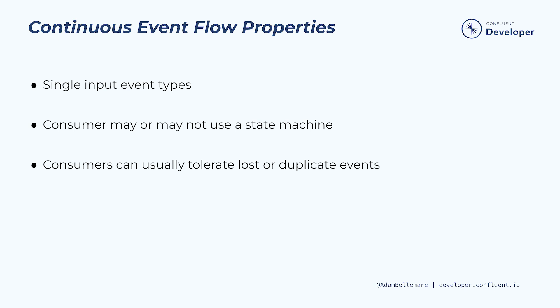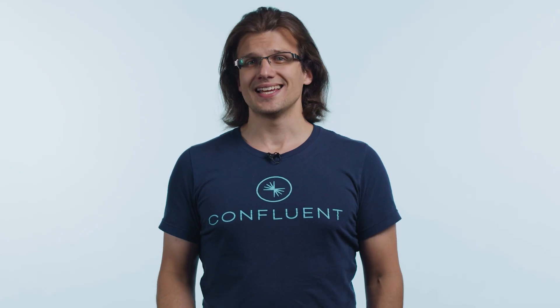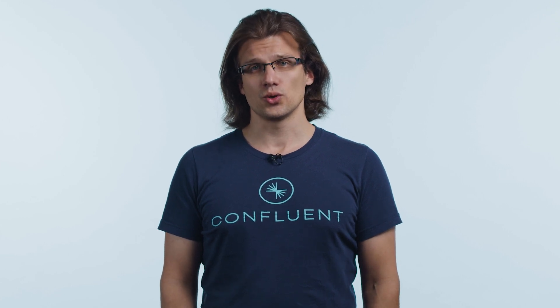And now, let's look at the continuous event flow properties. Continuous event flows typically use just a single input event type. The consumer may or may not use a state machine depending on the requirements. And consumers can usually tolerate lost or duplicate events, but it does depend on your use case. Event streams cover a wide range of possibilities for both discrete and continuous use cases. The order shipping workflow illustrated the use of order, payment, and shipment events to compute the progress of each user's order through the system. Metric events recording point-in-time measurements can be used for continuous use cases such as a visualization dashboard, but they can also power discrete state changes such as when using threshold alerts. When designing event streams, think about how your consumers may use the events to build either discrete or continuous workflows. Talk to your consumers to find out what their main use cases are so that you can ensure that their needs are met.